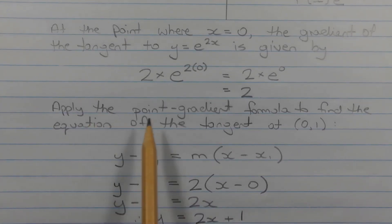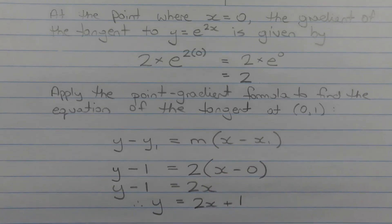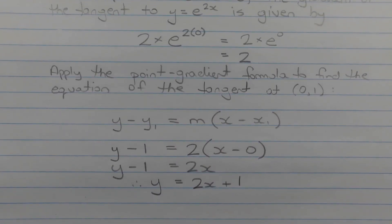Next, we apply the point-gradient formula to find the equation of the tangent at the point (0, 1). The point-gradient formula is y - y₁ = m(x - x₁).